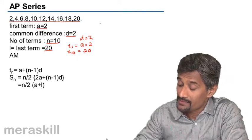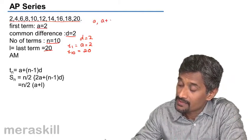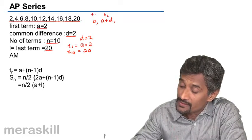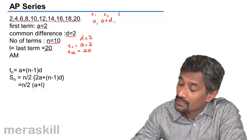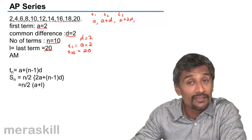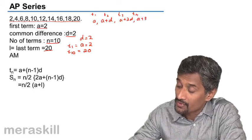On that basis, if you see, the first term is A, second term is A plus 1D, this is T2, this is T1. The third term is A plus 3 minus 1, 2D. The fourth term is A plus 4 minus 1, 3D.